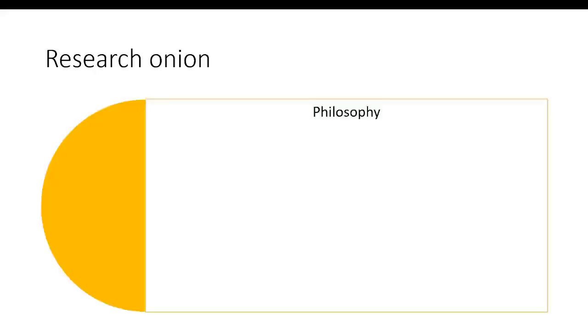It starts with the first step of philosophy. Philosophy means the basic fundamental ideas of the researcher through which the research would be conducted. Some of the very basic philosophical choices can be that you choose to have a positivist standpoint or you can have an interpretivist standpoint.